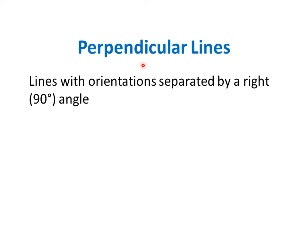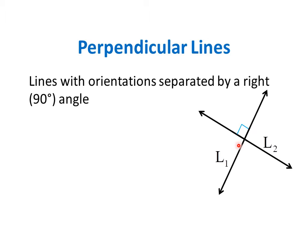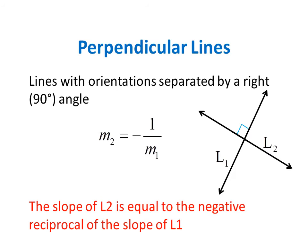Perpendicular lines are lines with orientations separated by a right or 90-degree angle. For example, line 1 is perpendicular to line 2 because these two lines are separated by a right angle or a 90-degree angle. Perpendicular lines are characterized by this equation: the slope of line 2 is equal to negative 1 divided by the slope of line 1. We have to remember that the slope of a perpendicular line is equal to the negative reciprocal of the slope of the other line.